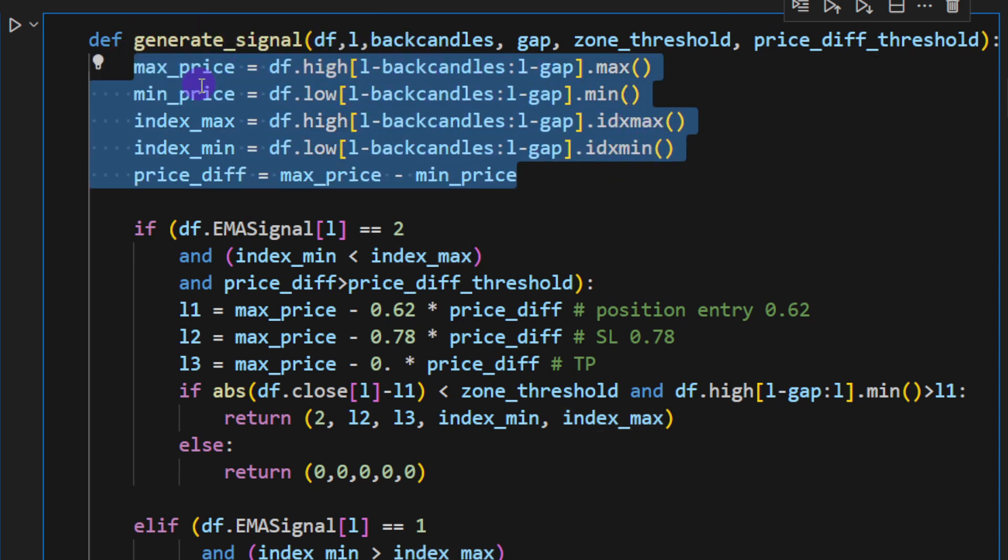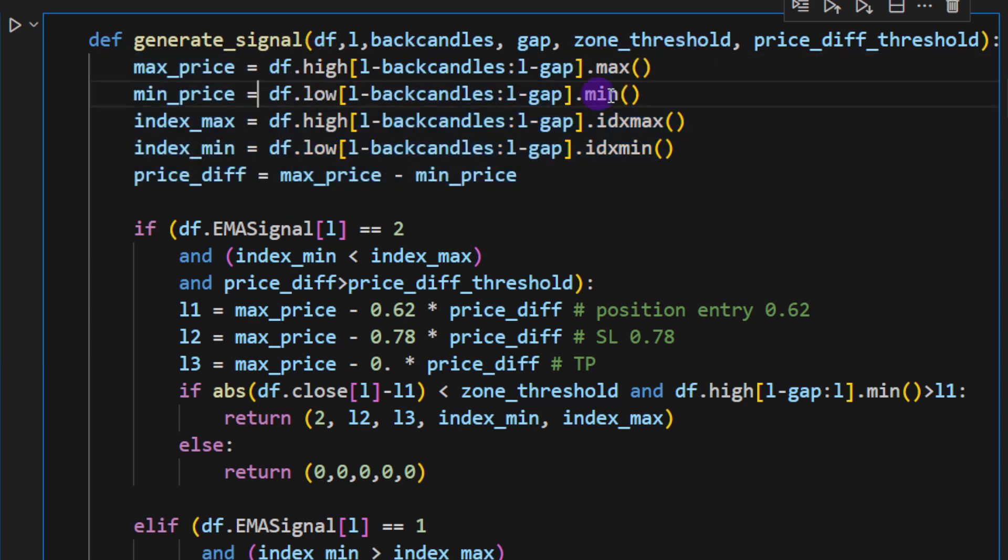We also want the difference of the price between the maximum pivot and the minimum pivot to exceed some threshold. You can't have small pivots like here where the prices are very much squeezed. This is not a real retracement—to have a retracement you need a large movement that should exceed a certain threshold. This is what the price diff threshold parameter is doing.